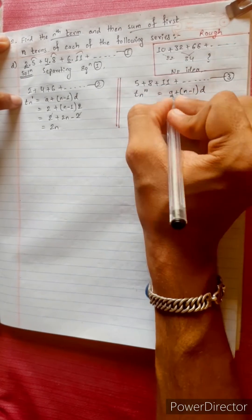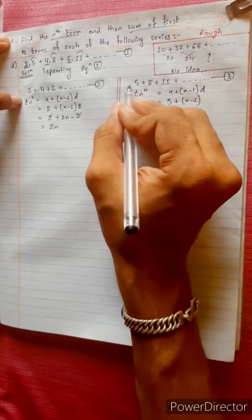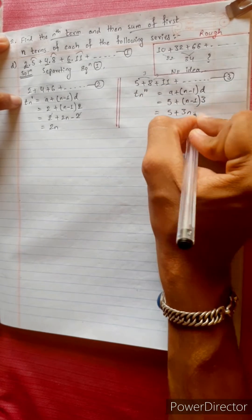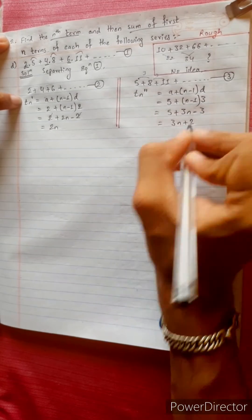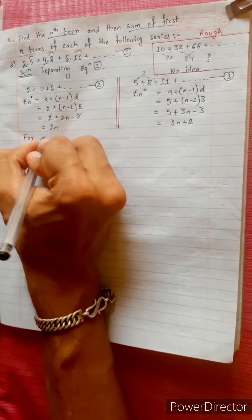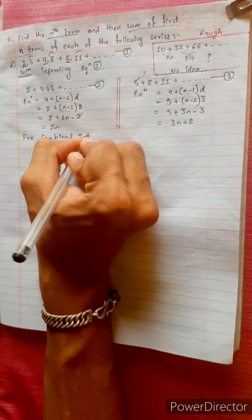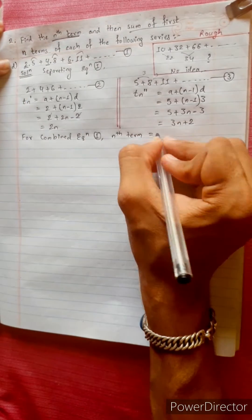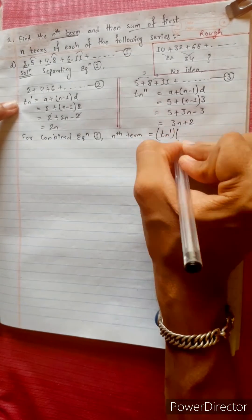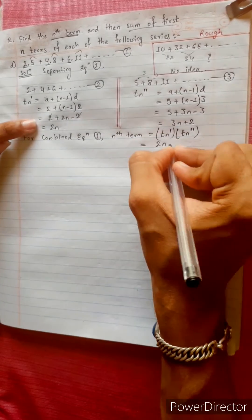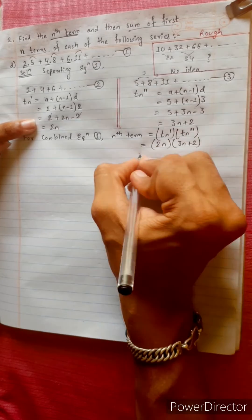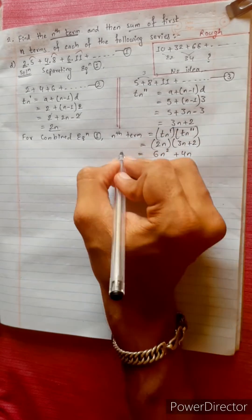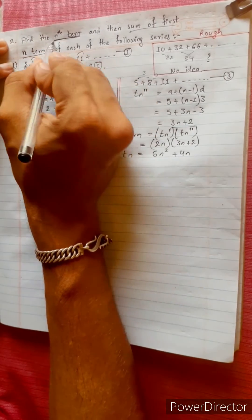The constant term gives 3n+2. For the combined equation 1, the nth term equals tn' multiplied by tn'', which equals 2n multiplied by (3n+2), giving 6n² + 4n. This is the nth term of equation 1.